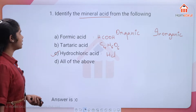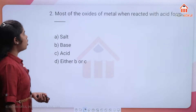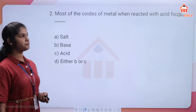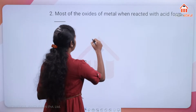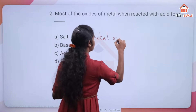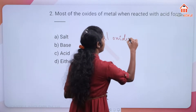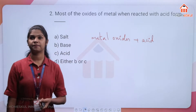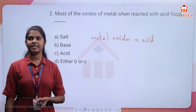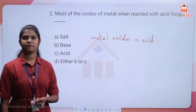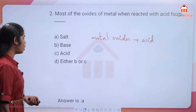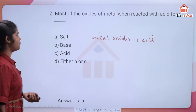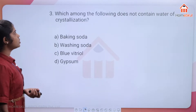Second question: most of the oxides of metals, when reacted with acid, form what? Metal oxide plus acid reacts to give salt. Option A is the correct answer.